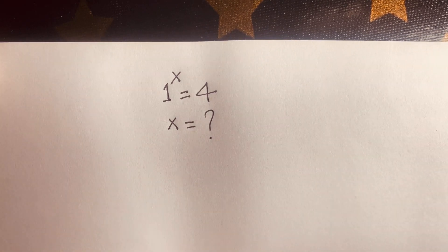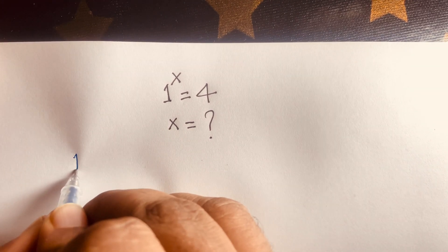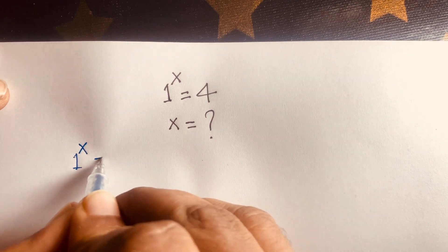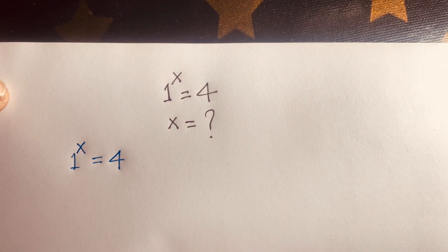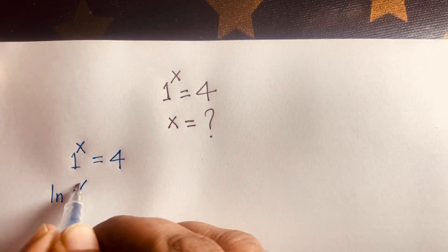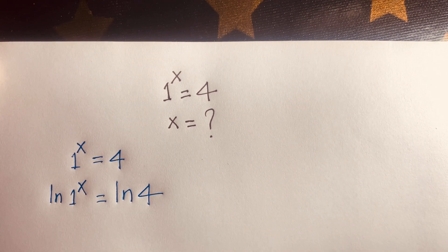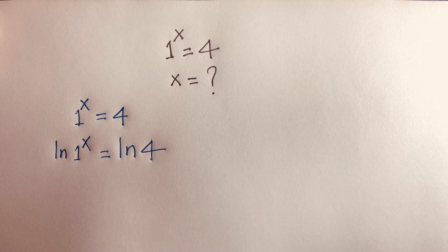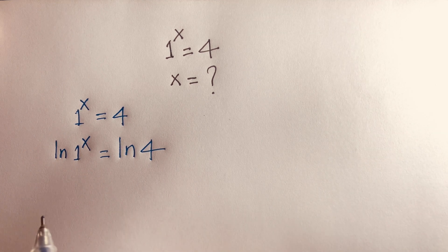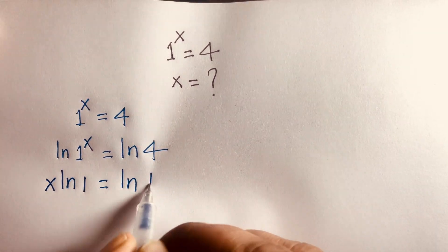If you want to solve this question, first of all, look — here is a method. I can say 1 to the power x is equal to 4. Then, if we use the natural log on both sides, I can say ln(1^x) is equal to ln 4. According to logarithm rules, the exponent x moves to the front, so x·ln 1 is equal to ln 4.